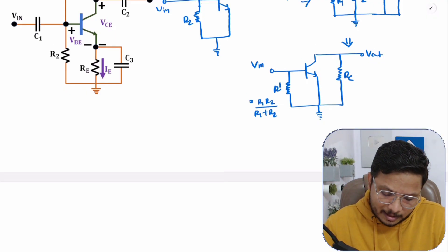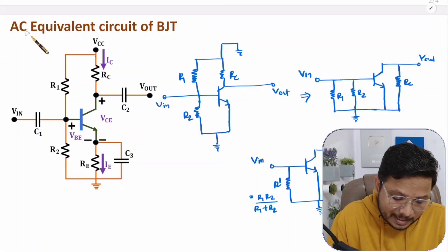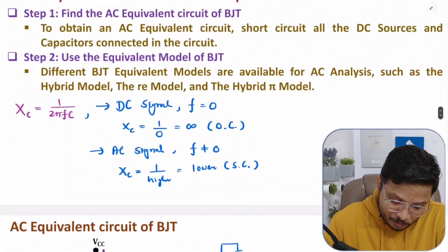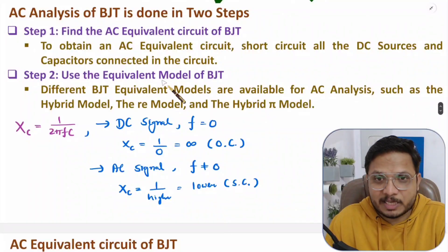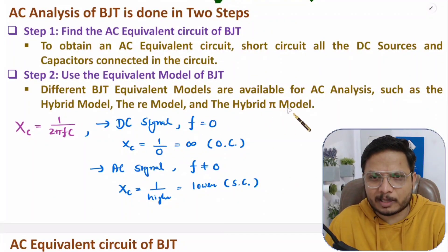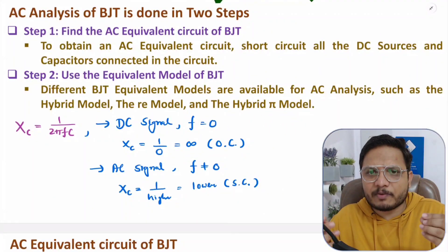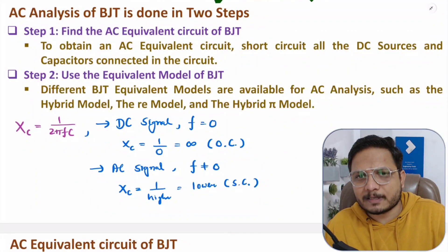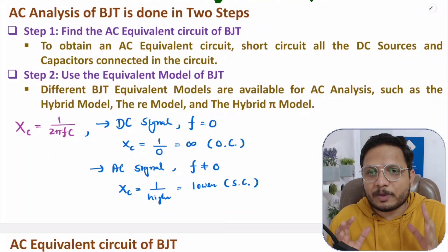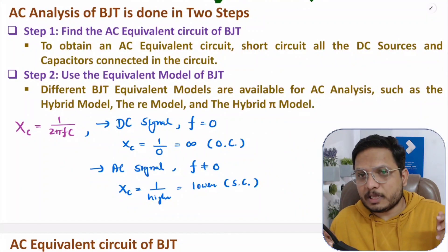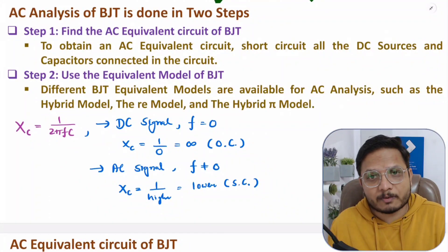I have explained the first step only — identifying the AC equivalent circuit. The second step is to use the equivalent model of the BJT. For the hybrid model, RE model, and hybrid Pi model, in future videos I will explain all those models in great detail. I hope you have understood how we can perform AC analysis. If you have anything to share, please note it in the comment section. Thank you so much for watching.